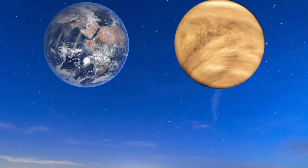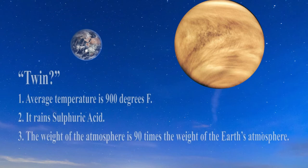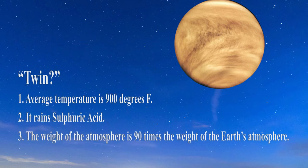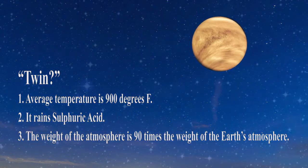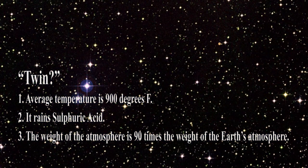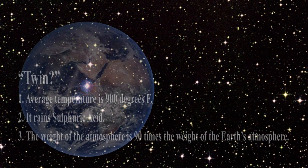The Earth and Venus are approximately the same size and Venus is often called Earth's twin. Twin? I mean consider just these three things about Venus. The average temperature is 900 degrees Fahrenheit. It rains sulfuric acid and the weight of the atmosphere is 90 times the weight of the Earth's atmosphere.